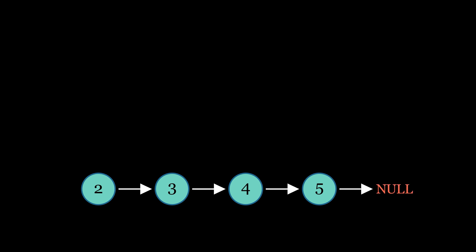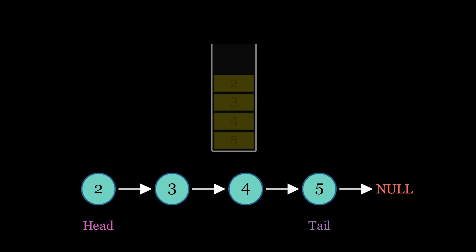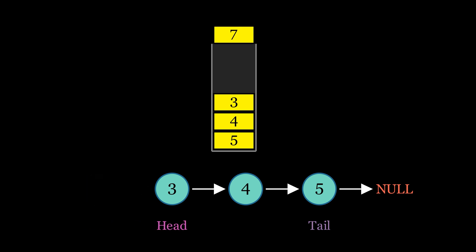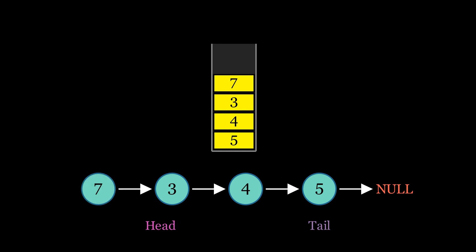Next, let's explore the implementation using a linked list. If you're not familiar with how linked lists work, you might want to check out the detailed animated video linked in the description. In the linked list implementation, the top stack element corresponds to the element at the head of the list, while the bottom element is at the tail. Popping an element involves deleting the node from the beginning of the list, and pushing an element means adding a new node at the head of the list.